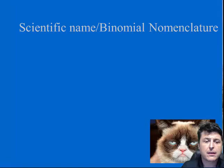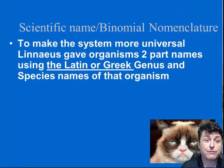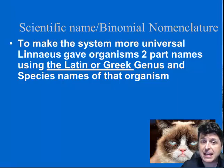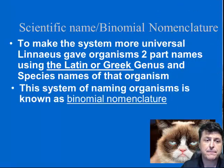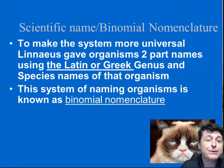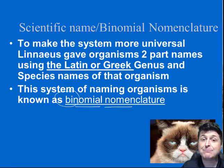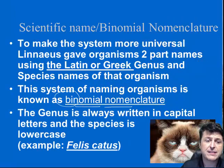Additionally, to make things more universal, Linnaeus made sure that every organism would have a specific name recognized all around the world — a two-part name. He used the genus and species name of that organism, based in Latin or Greek, to establish this naming system. This naming system is called binomial nomenclature, which is literal in its definition: 'bi' meaning two, 'nomen' meaning name, 'nomenclature' meaning naming system. So for example, a cat's scientific name would be Felis catus.